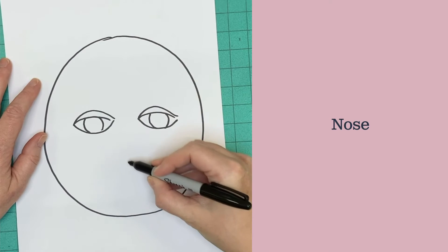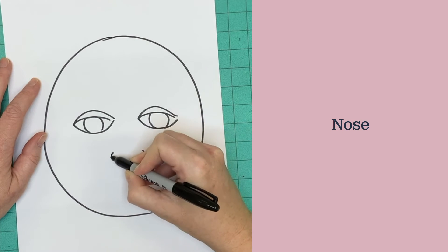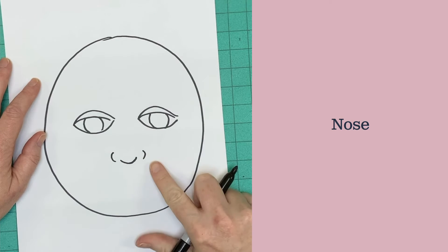Your nose goes below your eyes. Start by putting a little curve and then two little curves on the side. Don't worry about the top part.